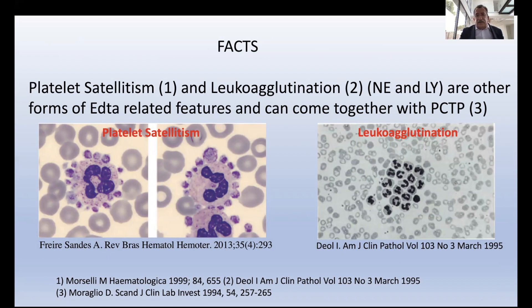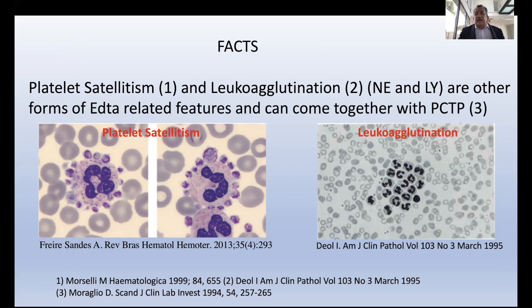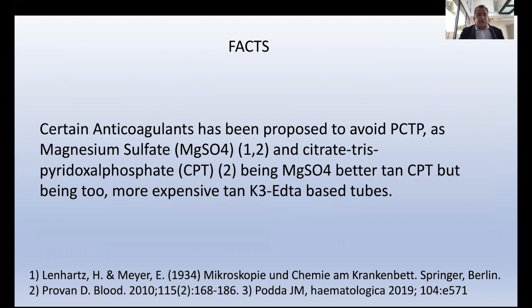Platelet satellitism is the same type of interference due to antibodies against crypto antigens, where platelets surround neutrophils causing an abnormally low platelet count. You can also find EDTA-dependent leucoagglutination — a rare phenomenon. I witnessed a case at the Mayo Clinic with Robert Pierre, later published in the American Journal of Clinical Pathology, and personally detected only one case in France around 1999. Warming, mixing, or adding aminoglycosides can prevent or dissociate this leucoagglutination.